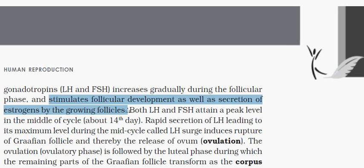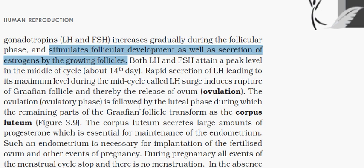FSH and LH control the formation and secretion of estrogen. LH causes ovulation by rupturing the wall of the Graafian follicle. Progesterone, as mentioned, is secreted by the corpus luteum in large amounts and is essential in the maintenance of the endometrium.